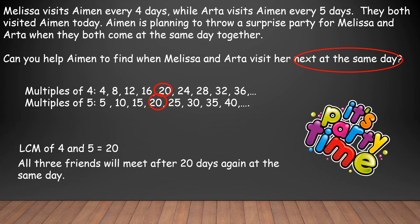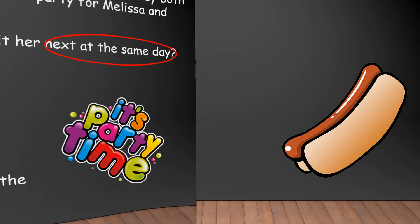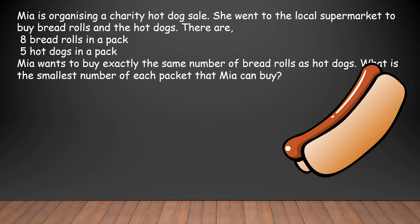Here is our next example. Mia is organizing a charity hot dog sale. She went to the local supermarket to buy bread rolls and hot dogs. There are eight bread rolls in a pack and five hot dogs in a pack. Mia wants to buy exactly the same number of bread rolls as hot dogs. What is the smallest number of each pack that Mia can buy? The key words to pay attention to are 'exactly the same number,' because we can apply our knowledge of LCM to figure out how many of multiple items we need in order to have enough.